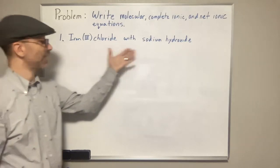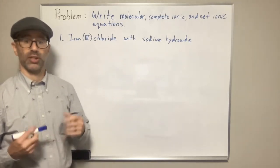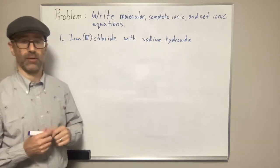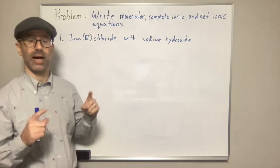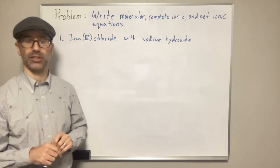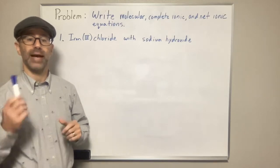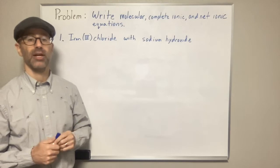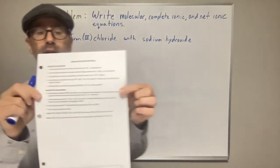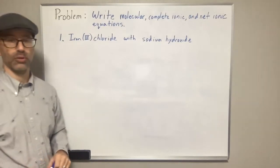So here we have one example where you're given two reactants in words — they're not giving you the formulas. You need to know how to go from the names of the substances to the formulas. In addition to that, you're going to need to figure out how to get the products, and you're going to need your solubility chart or solubility rules, so have that handy.